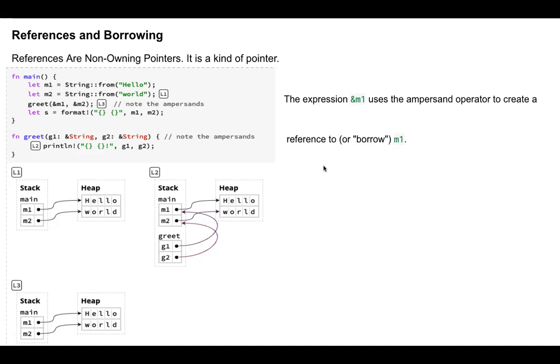As we know, in Rust there are two types of memories. One is stack, one is heap, and when you declare a variable using this format like box new or something like string from, it stores the value in the heap.